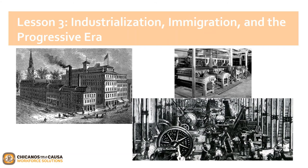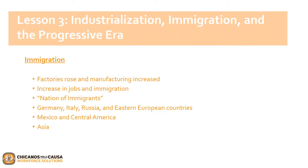Industrialization led to several factories being built to manufacture the products consumers were yearning for. In the mid and late 1800s, factories were built in New York, Boston, Chicago, Philadelphia, and Pittsburgh. With the emergence of factories, population growth, and increased goods, manufacturing work was also increasing. Many immigrants came to America seeking the American Dream, believing the United States was a nation of immigrants. The majority came from Germany, Italy, Russia, and Eastern Europe, though many also came from Mexico and Central America.